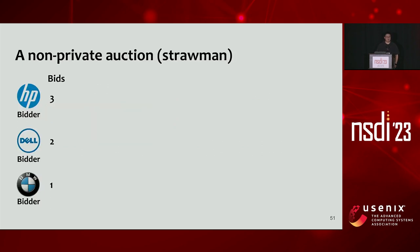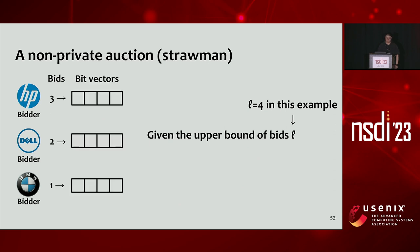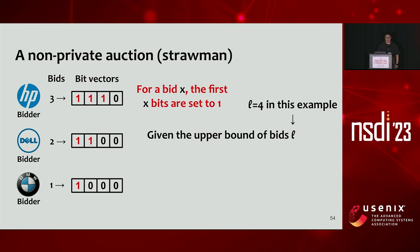Before describing the private protocol, I'll walk through a non-private auction protocol as intuition. We have three bidders each holding a bid, with an upper bound on maximum possible bid L set to 4 in this example. Each bidder creates a bid vector of four elements, each either 0 or 1. Given a bid value X, the bidder sets the first X entries to 1 and the remaining entries to 0. For example, the first bidder with bid 3 sets the first three entries to 1 and the last to 0.